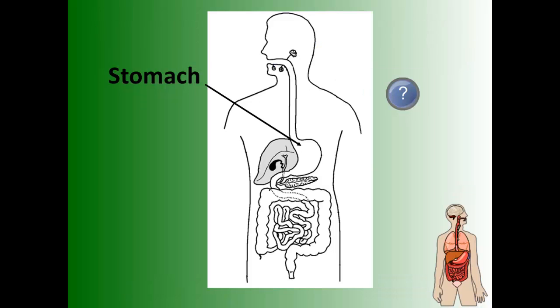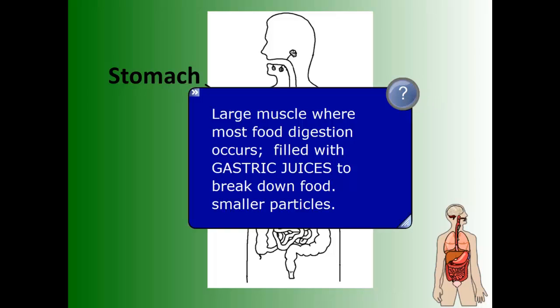Now we're down at the stomach, where the food is a fairly unpleasant substance by now. This is where the major part of chemical digestion happens. The stomach is the largest muscle in your digestive system responsible for chemical digestion. It's filled with gastric juices strong enough to break food down into the very smallest particles. That hamburger or banana from 24 hours ago has been broken down into minerals and vitamins, and now it can be reabsorbed.